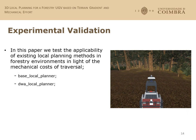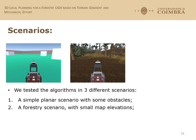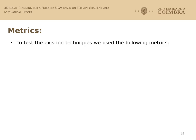In this paper, we test and compare the applicability of some local planning algorithms to see if they take into account the mechanical effort of the robot. The algorithms tested are the base local planner and the DWA local planner. The tests were made in a simulated environment created with Unity, shown in the picture on the right. Three different scenarios were used: a first simple, planar scenario with some obstacles; a second scenario with small elevations; and a third scenario with large yields and big elevations.